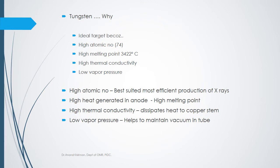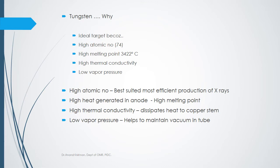Any material subjected to constant heat has a tendency to vaporize. Inside a vacuum tube, vapor would interfere with x-ray production, so we need a material with very low vapor pressure and very high melting point. Tungsten's high atomic number is best suited for efficient x-ray production; its high thermal conductivity dissipates heat to the copper stem, and its low vapor pressure helps maintain the vacuum.